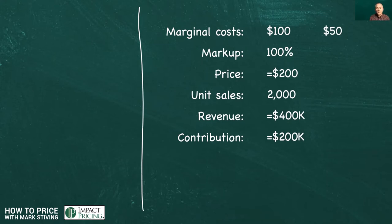Now, we still want 100% markup. So what are we going to do? Our new price is now $100. Unit sales, well, that's what we're going to try to figure out. We still want to keep the same $400,000 in revenue. If we keep $400,000 in revenue and we've got 100% markup, then we know half of that's going to be contribution margin.